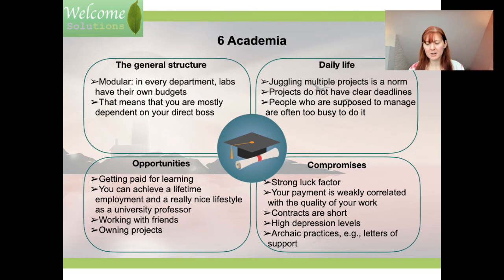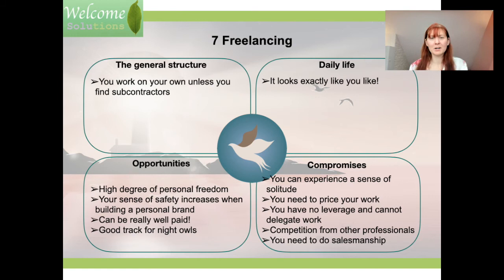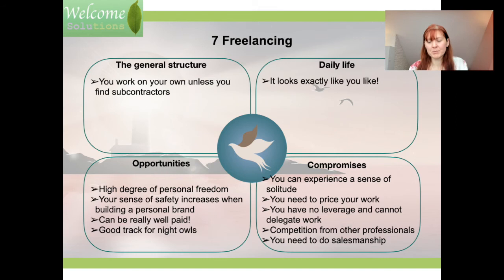Academia also has significant downsides: there's a strong luck factor, still high rates of depression among academics, a lot of rat-race competition, and short-term contracts — making it a generally stressful lifestyle. Seventh: freelancing. You work for yourself and your daily life looks exactly as you design it — a high degree of freedom. If you're skilled and consistent, you can reach a high salary range. However, you can experience a lot of solitude, you have to be your own salesperson, price your work, and hustle for clients — especially in the beginning.